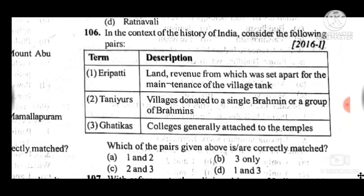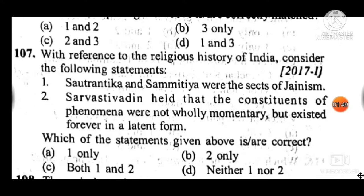Question 107: With reference to the religious history of India — Sutranthika and Sammitiya were sects of Buddhism; Sarvastivadins held that the definitions of phenomena were not wholly momentary but existed forever in a latent form. Answer is B — two only.